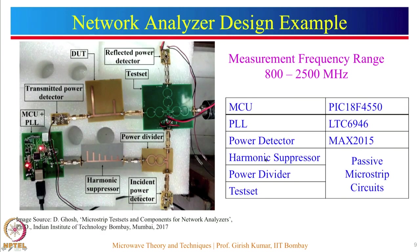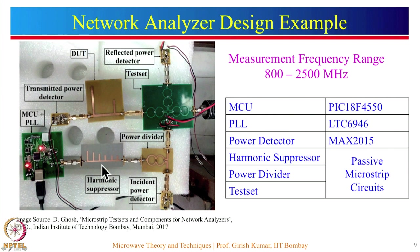Let us have a look at a practical implementation of a scalar network analyzer developed at IIT Bombay, with a measurement frequency range from 800 to 2500 megahertz. The system consists of a microcontroller unit and a PLL on a single board. The MCU uses PIC 18F 4550, and the PLL frequency synthesizer is implemented using LTC 6946 IC from Linear Technology. The PLL output is given to a harmonic suppressor to suppress harmonics, processing only the fundamental frequency.